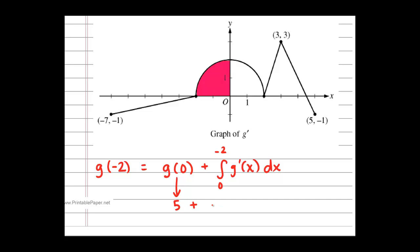The integral from 0 to negative 2 is the same as the opposite of the integral from negative 2 to 0 of g prime of x dx. So in other words, my value of that integral is going to be pi, so I've got 5 plus a minus pi, being the height of negative 2.